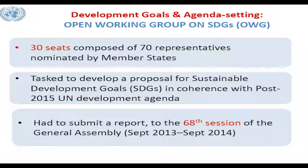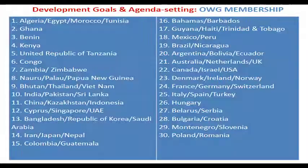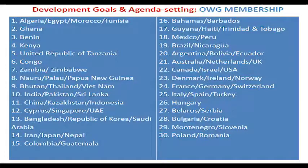Countries involved in the Open Working Group included African nations: Algeria, Egypt, Morocco, Tunisia, Ghana, Benin, Kenya, United Republic of Tanzania, Congo, Zambia, and Zimbabwe. If a continent is not represented, the agenda is set without you. There were also United Nations Development Group national consultations across the world in Asia, Africa, Asia-Pacific, Latin America and Caribbean, Arab States, and Eastern Europe.